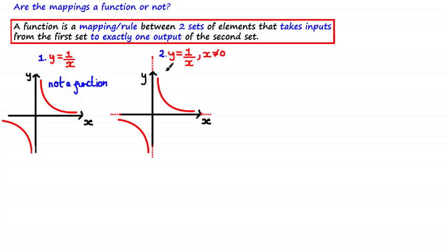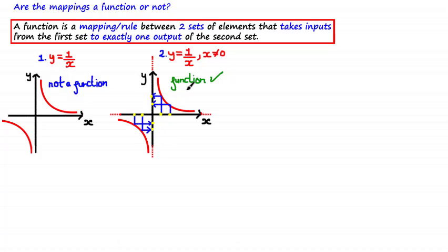Here we have the same mapping y = 1/x, but the domain is restricted so that x can take any real value apart from zero, illustrated by the vertical asymptote on the graph. In this case, the mapping is indeed a function because every possible value of x we input gives us exactly one unique output of y, as shown by the mappings on the graph. So by restricting the domain of a mapping, you can sometimes make a mapping a function.